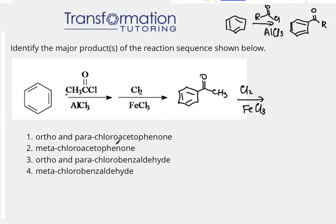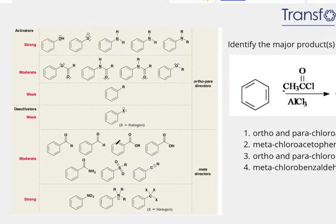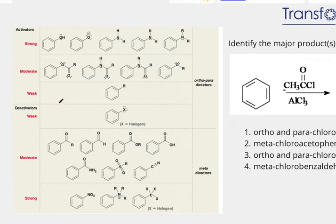For that we can use a chart which is the ortho/para directing, meta directing chart that I'm going to show here. Basically what this chart shows us is the groups that are ortho/para directing and the groups that are meta directing. There is good reasoning behind it which I will cover in one of my next videos, but for now we can just use this chart to predict where the second group will go.